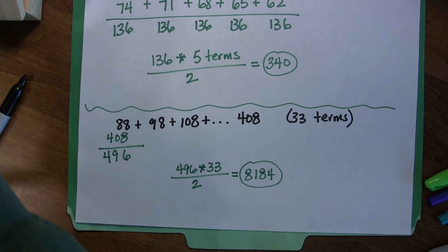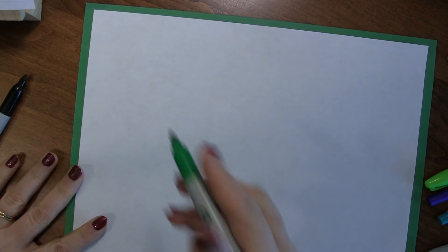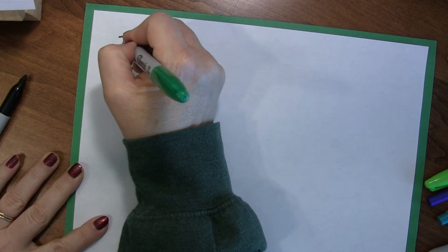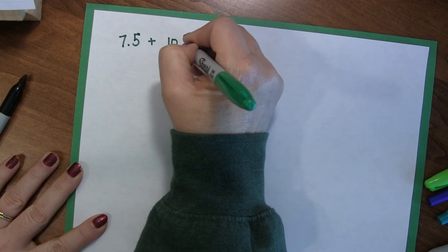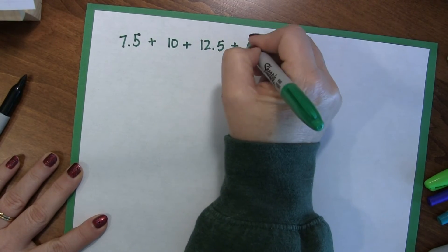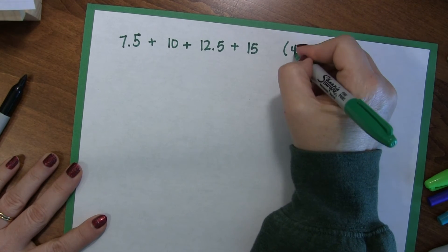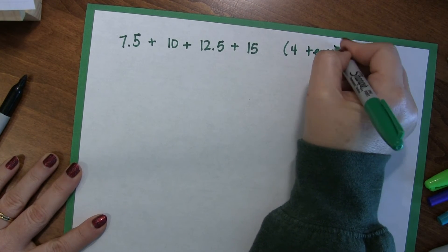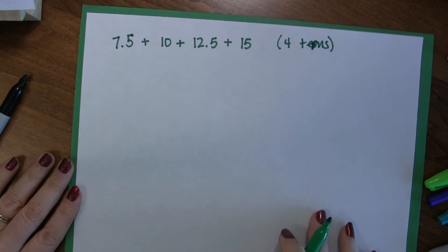So that is pretty cool. It works, by the way, this method, it works no matter how weird the distance is between your numbers. So for instance, if this were my equation, 7.5 plus 10 plus 12.5 plus 15, and that's, well, what is that, that's four terms. Oops. That's four terms.